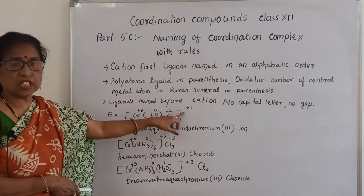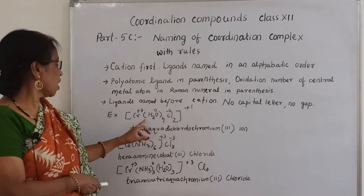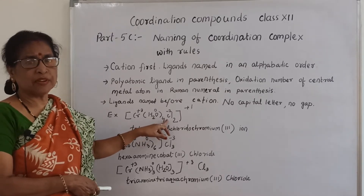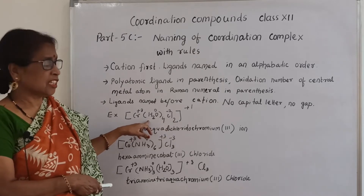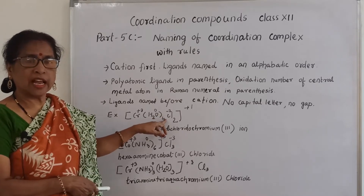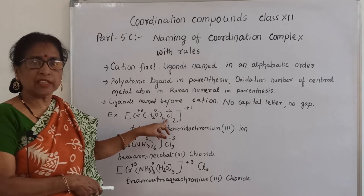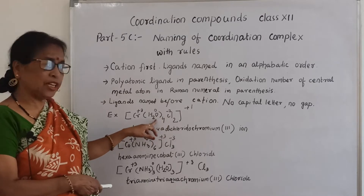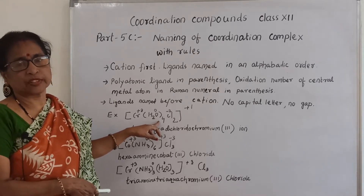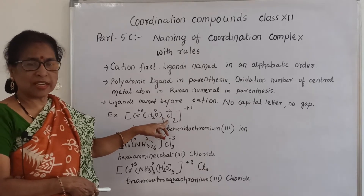Let us look at an example. This coordination complex ion is cationic with a +1 charge. Water is a neutral ligand — in coordination nomenclature, H₂O is called 'aqua'. Chloride is a negative ligand, called 'chlorido' in a coordination compound. There are 4 water molecules — so 'tetraaqua' — and 2 chloride ions — so 'dichlorido'.